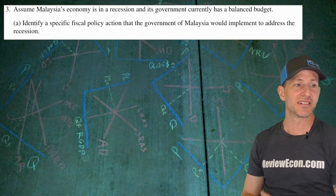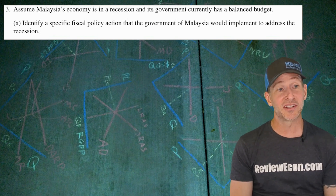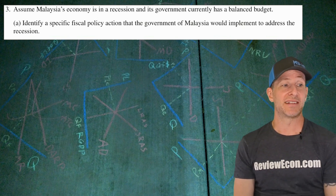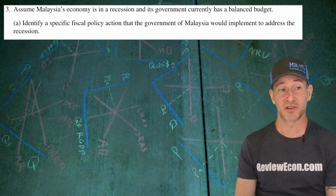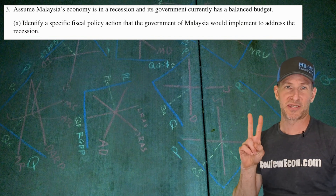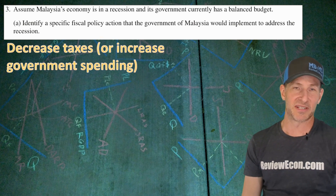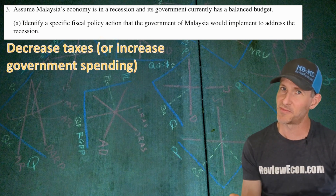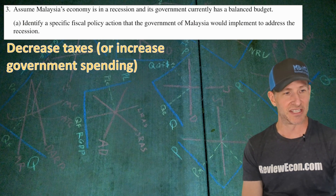On to part three. We assume Malaysia's economy is in a recession and its government currently has a balanced budget. We need to identify a specific fiscal policy action to address the recession. There are two possibilities: decrease taxes or increase government spending. That is the fiscal policy action. If you were talking about monetary policy, that's not going to get you the point — fiscal policy is required here.